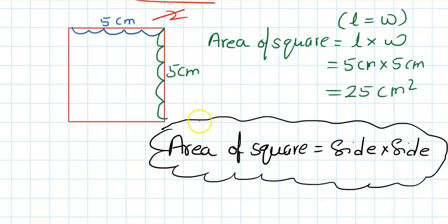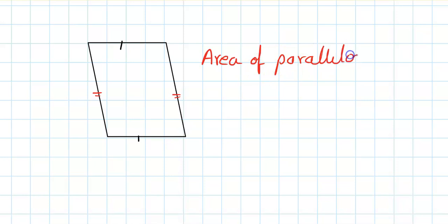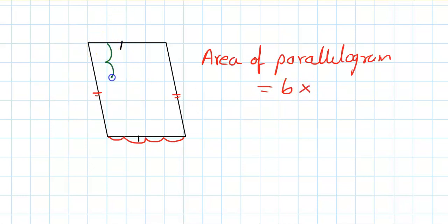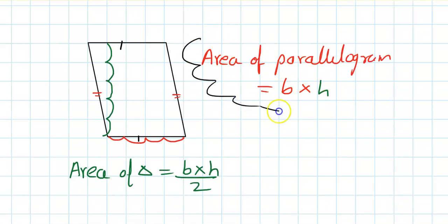Now let's move to the area of a parallelogram. In a parallelogram, opposite sides are parallel and equal: this side equals the opposite side, and the other pair of opposite sides are equal too. The area of a parallelogram is base times height — we do not divide by 2. The difference from a triangle is that for a triangle we divide by 2, but for a parallelogram we just do base times height.